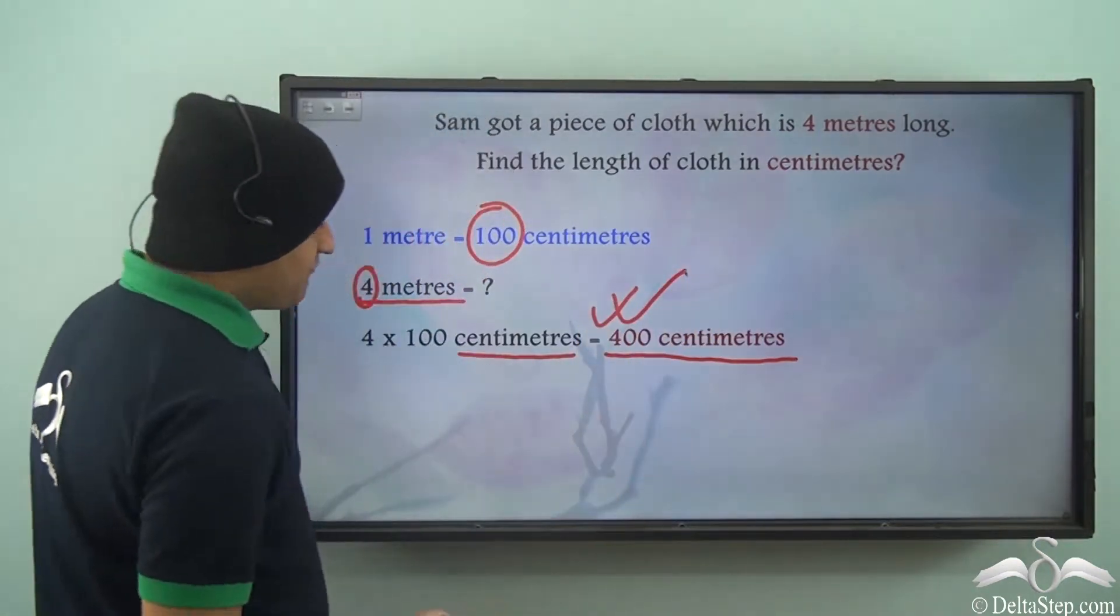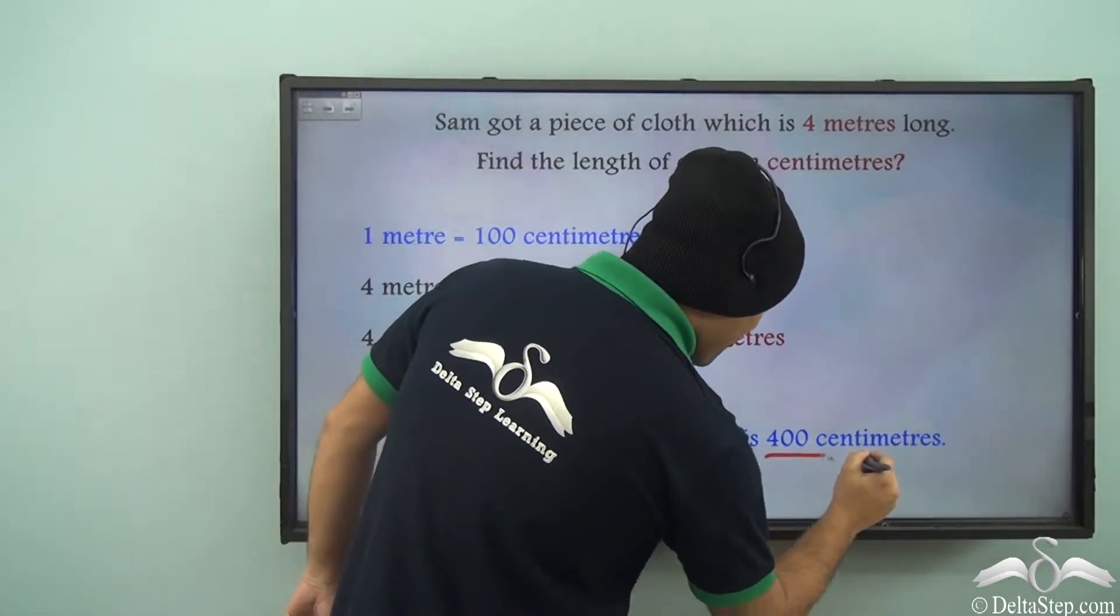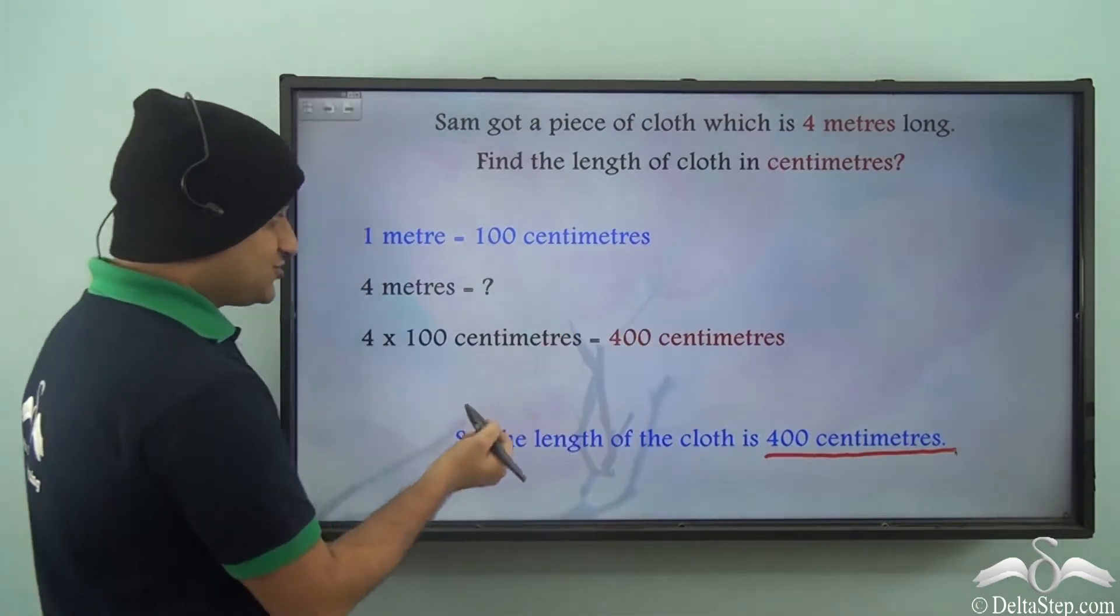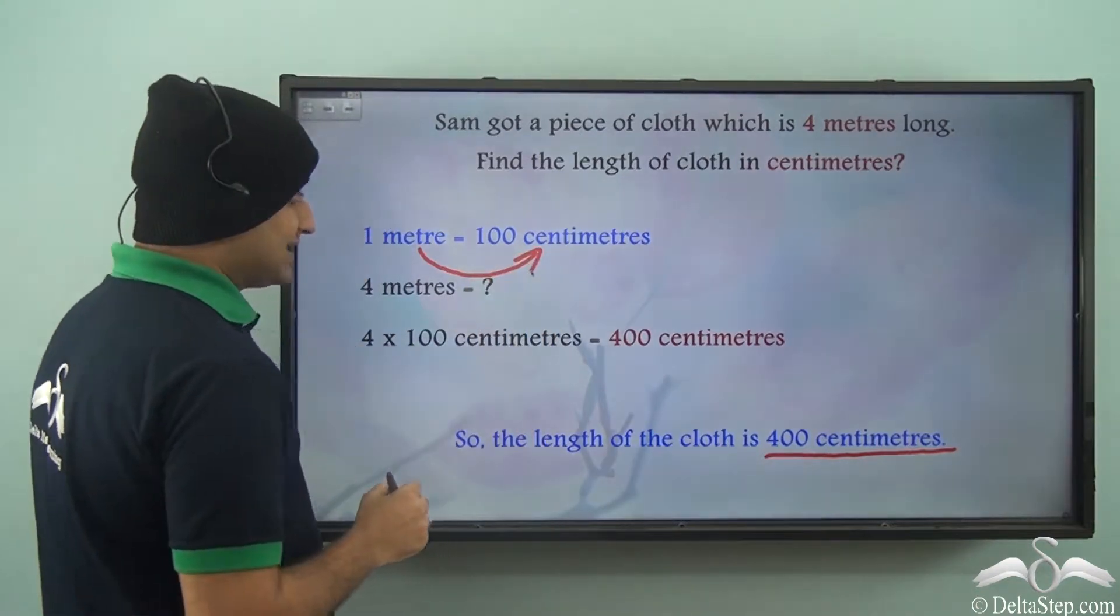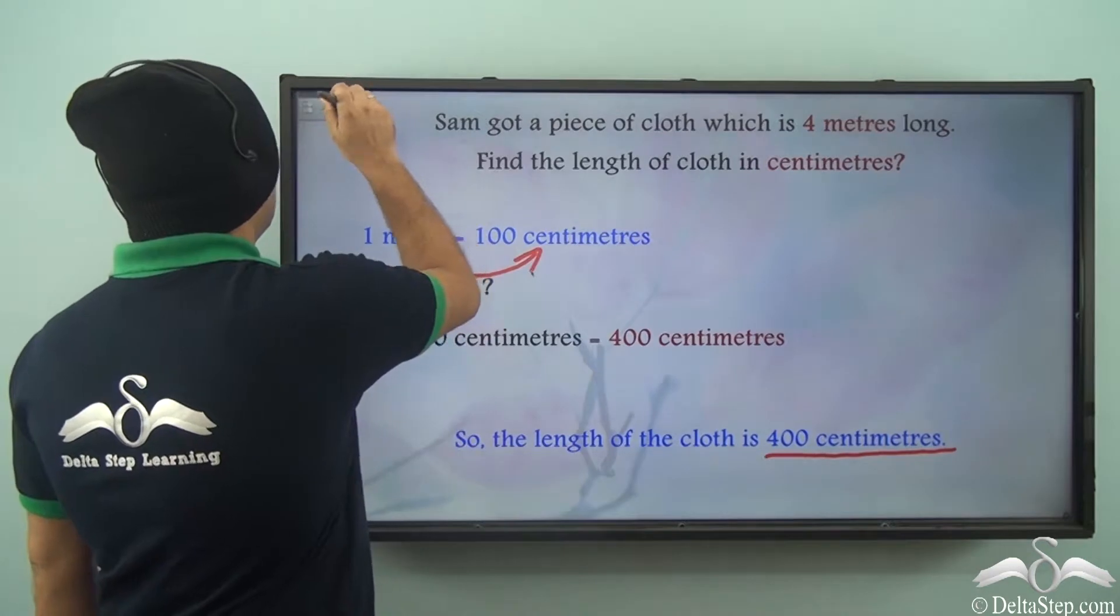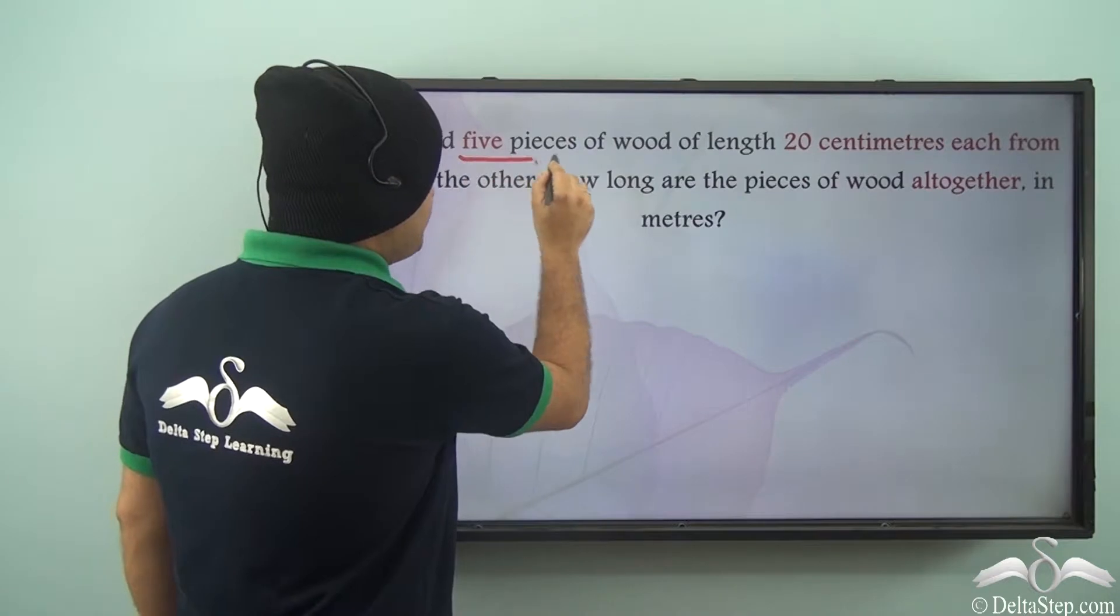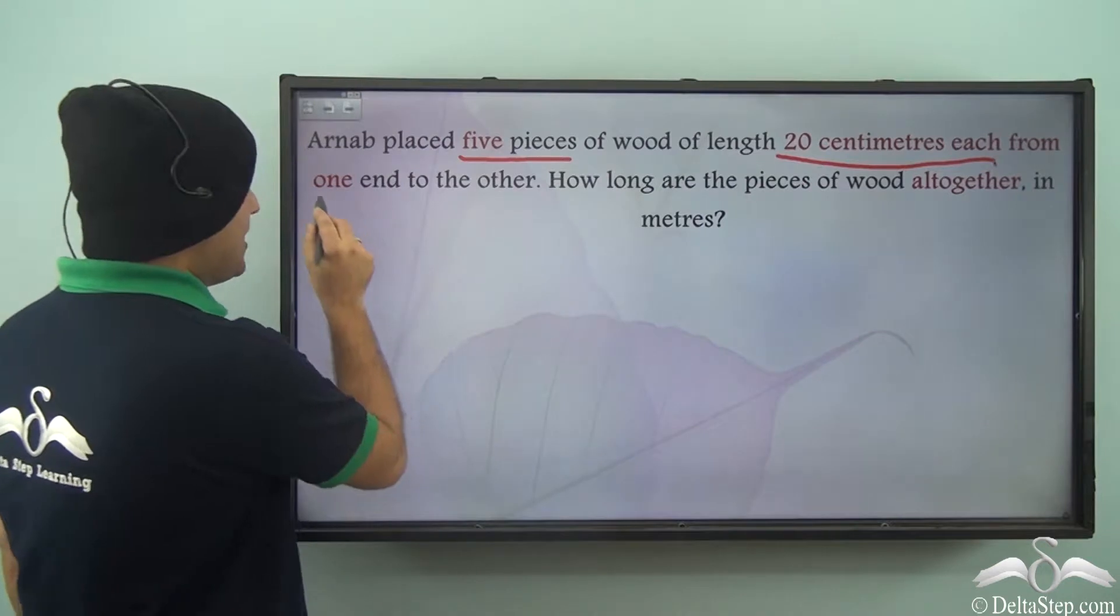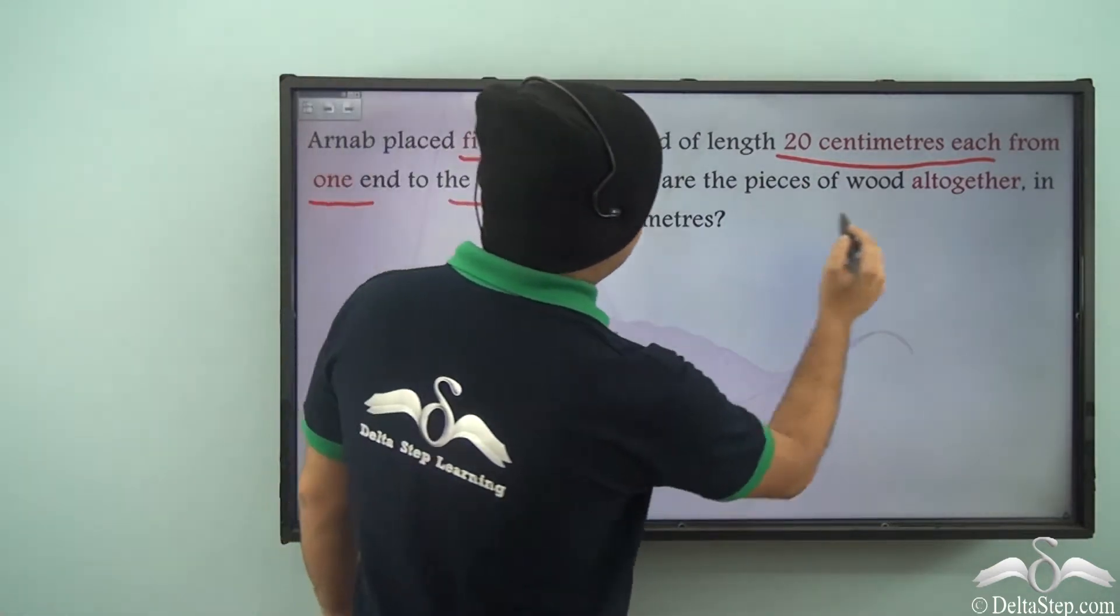The length of the cloth is 400 centimeters, and we converted it using the trick that when we convert from larger unit to smaller unit, we multiply. Now Arnab placed five pieces of wood of length 20 centimeters each from one end to the other. How long are the pieces of wood altogether in meters?